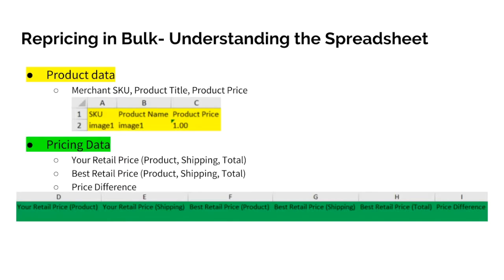Product details like SKU, title, and product price will be pulled from your listing data, while pricing data will be pulled from the marketplace itself. The product price is the initial price you uploaded when you set up the product in Geekseller, while the retail price shows what is currently displayed for the product, likely set by our repricer if it's been turned on. We also provide a breakdown of the product and shipping and total prices to help you determine if you need to change shipping costs in order to remain competitive and to show you what your competition is offering.